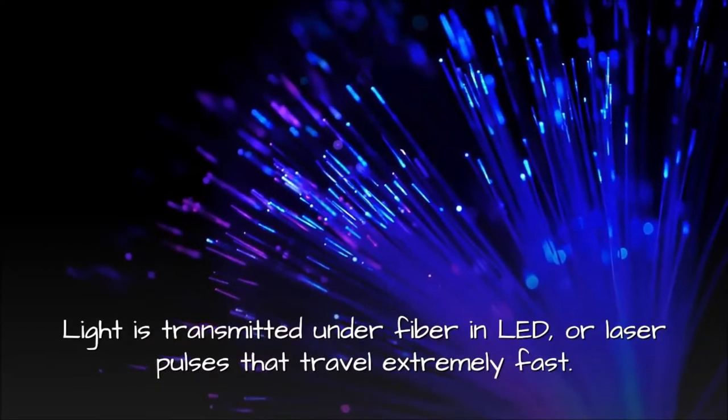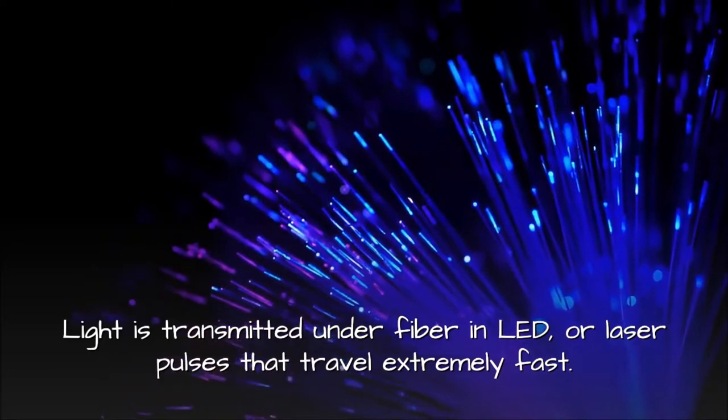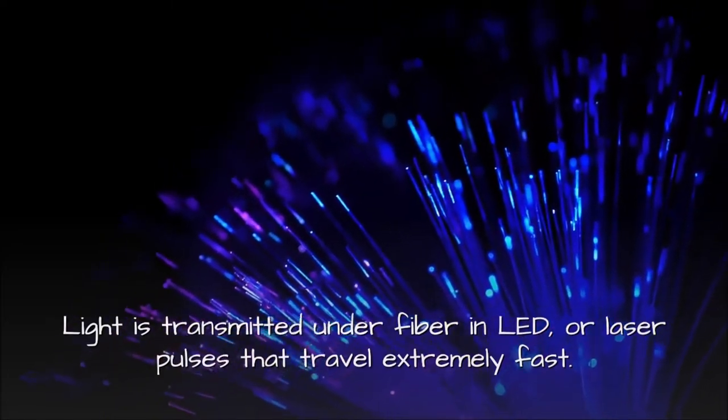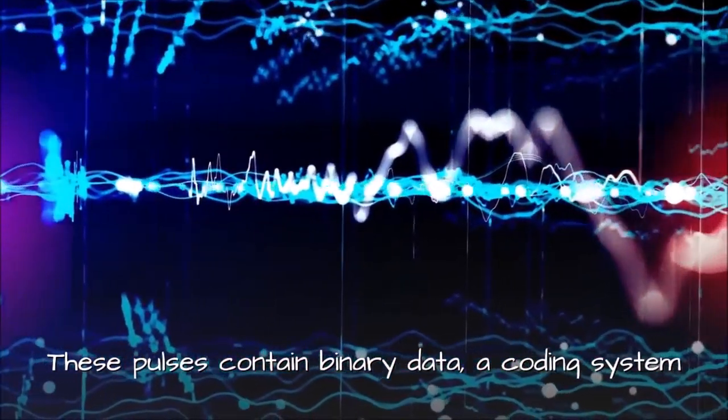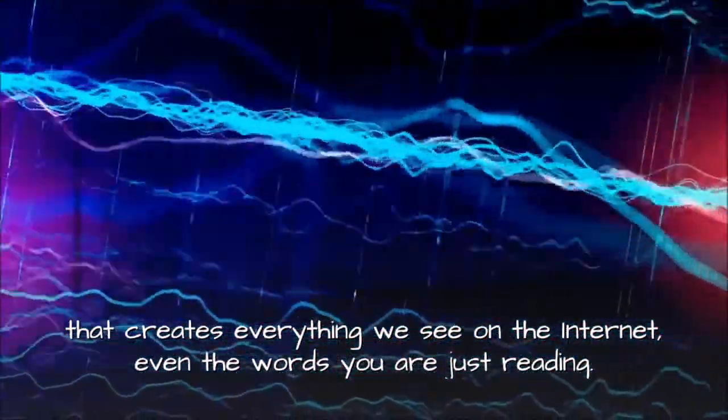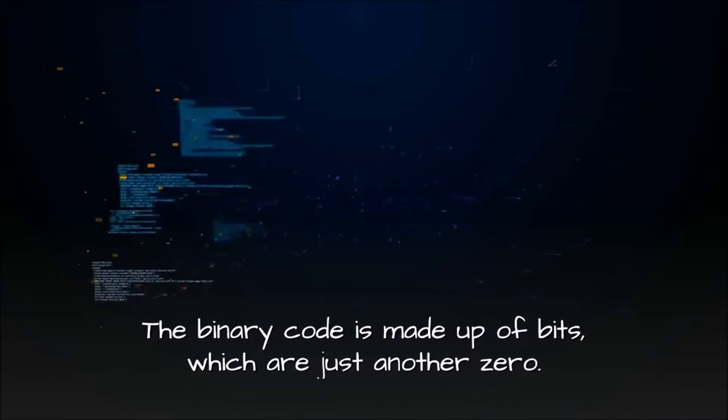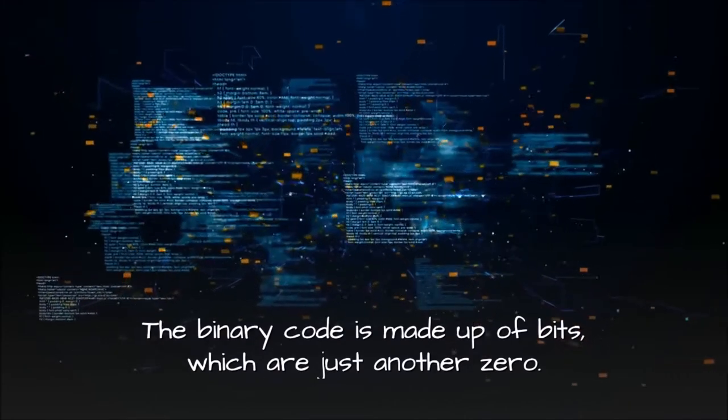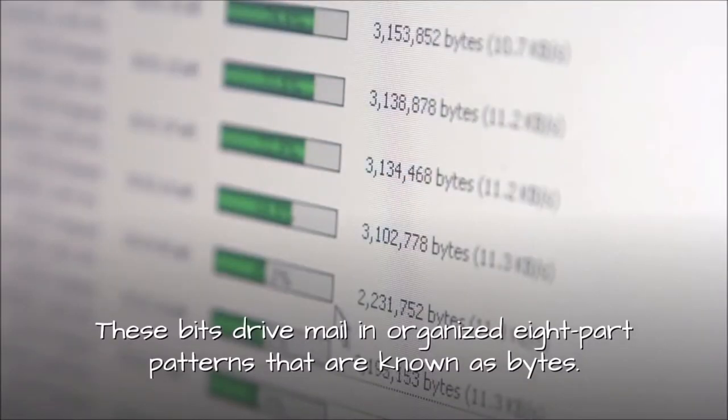Light is transmitted through fiber in LED or laser pulses that travel extremely fast. These pulses contain binary data, a coding system that creates everything we see on the internet, even the words you are reading. The binary code is made up of bits, which are zeros and ones. These bits combine in organized eight-part patterns known as bytes.